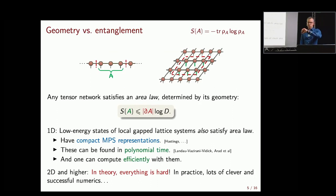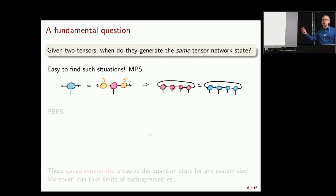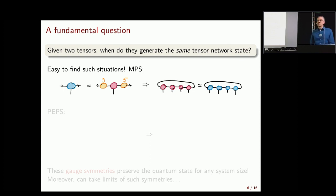I want to talk about the fundamental theorem. The fundamental question is: suppose you have two MPS tensors — when do they generate the same quantum state for arbitrary system size? This is asking about the redundancy or ambiguity in the description. It is easy to see that such redundancy exists by design of the ansatz.